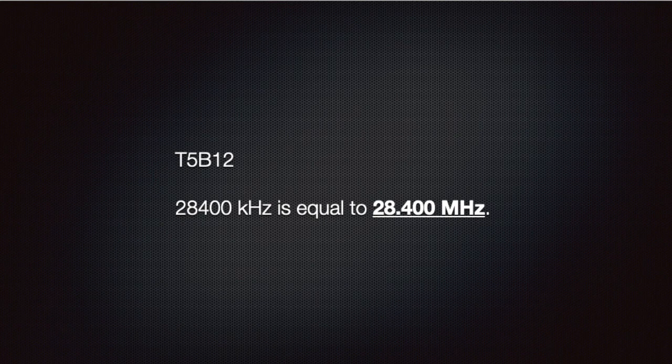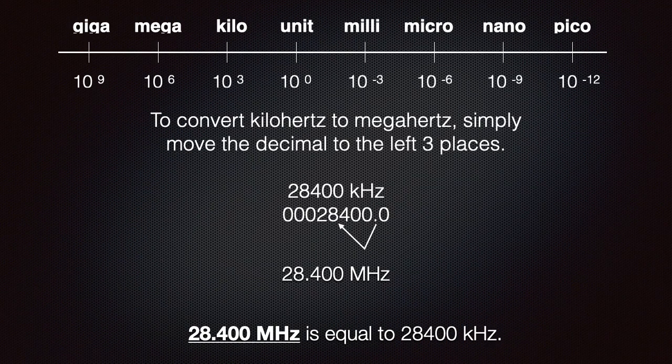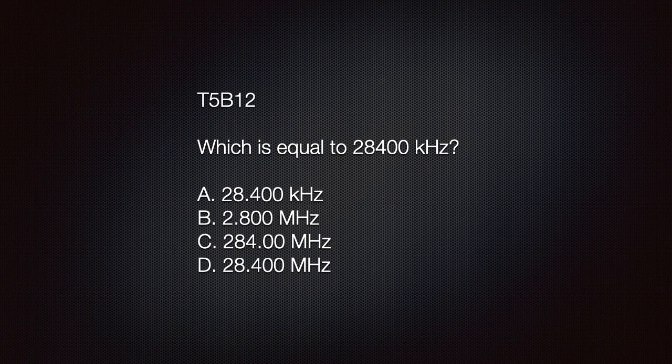We need to know that 28,400 kilohertz is equal to 28.400 megahertz. To convert kilohertz to megahertz, simply move the decimal three places to the left. The exam question looks like this: which is equal to 28,400 kilohertz? A) 28.400 kilohertz, B) 2.800 megahertz, C) 284.00 megahertz, or D) 28.400 megahertz.